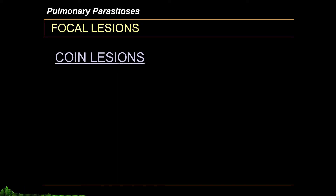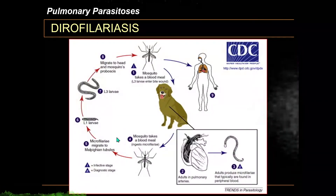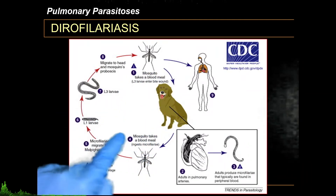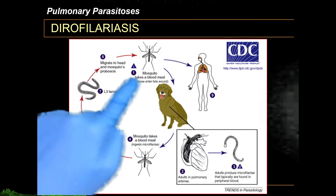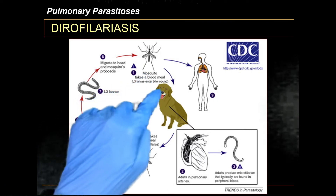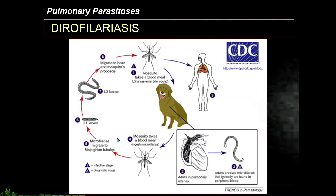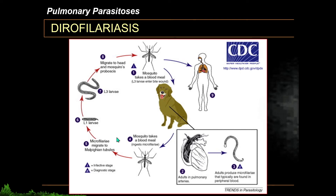The next type of focal lesions are coin lesions. A typical example is caused by dirofilariasis, caused by Dirofilaria immitis, the dog heartworm. The route of infection is through mosquito bites and entry of third-stage microfilariae. The life cycle generally revolves around the definitive host, the dog. Dirofilariasis is vector-borne, and both infections of dogs and humans are due to bites of the vector mosquito. In humans, however, microfilariae are deposited in the right ventricle where they die and get swept into the pulmonary arteries, forming a nidus for thrombus formation. Similar to Echinococcus, humans are dead-end hosts.